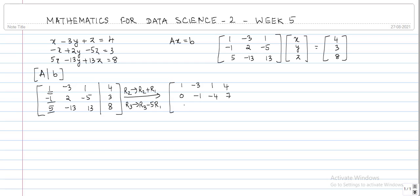The last row is last row minus 5 times first row. So 5 minus 5 is 0, minus 13 plus 15 is 2, 13 minus 5 is 8, and 8 minus 20 is minus 12.